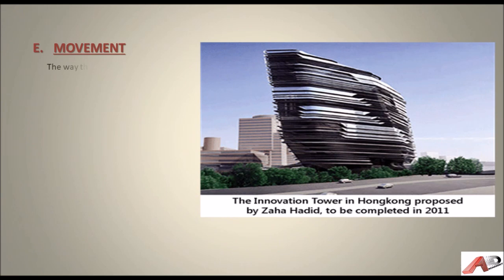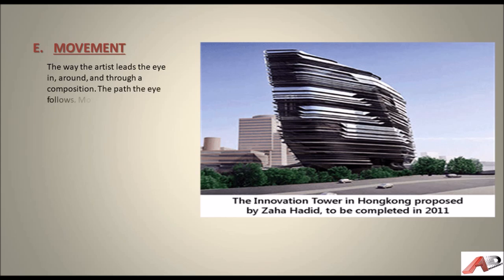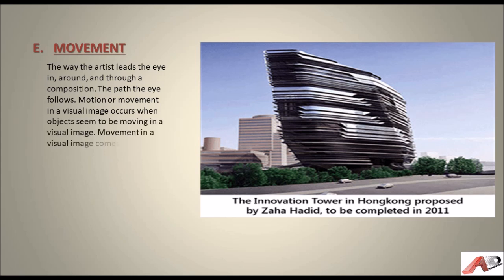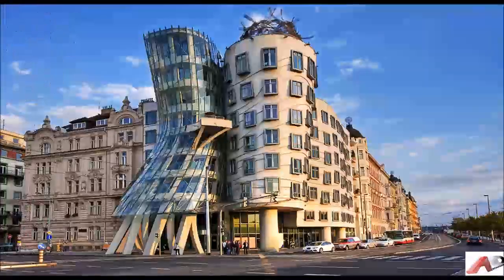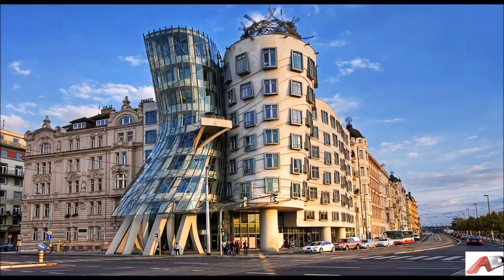Movement is the way the artist leads the eye in, around, and through a composition — the path the eye follows. Motion or movement in a visual image occurs when objects seem to be moving. Movement comes from the kinds of shapes, forms, lines, and curves that are used. In this image, the dancing house is a great example of movement.